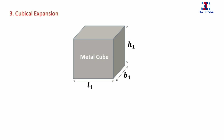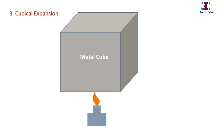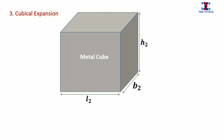Thermal expansion in three dimensions is also called cubical expansion. In cubical expansion, substances like a metal cube when heated increase in length, breadth, and height — that is, there is an increase in volume.